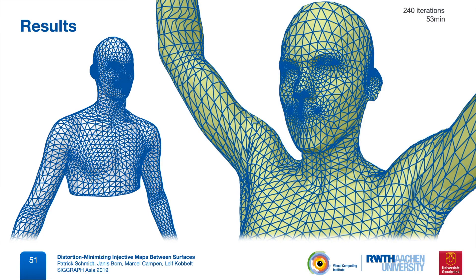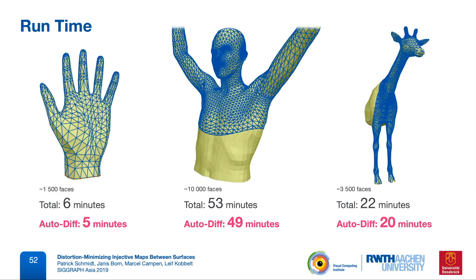This example with about 10,000 triangles per mesh took 53 minutes to compute. However, 49 of those minutes were spent on auto-differentiation, so we're confident that this can actually be quite fast and we expect a huge speedup from using handcrafted derivatives and other obvious optimizations.